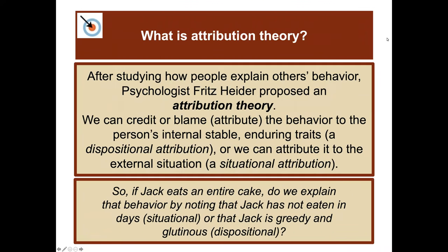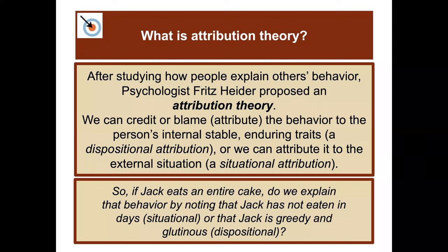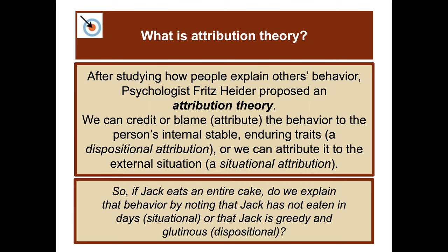Next we'll talk about attribution theory — to what do we attribute other people's behavior and our own? After studying how people explain others' behavior, psychologist Fritz Heider proposed attribution theory. We can credit or blame behavior to the person's internal, stable, enduring traits — a dispositional attribution — or we can attribute it to the external situation — a situational attribution.